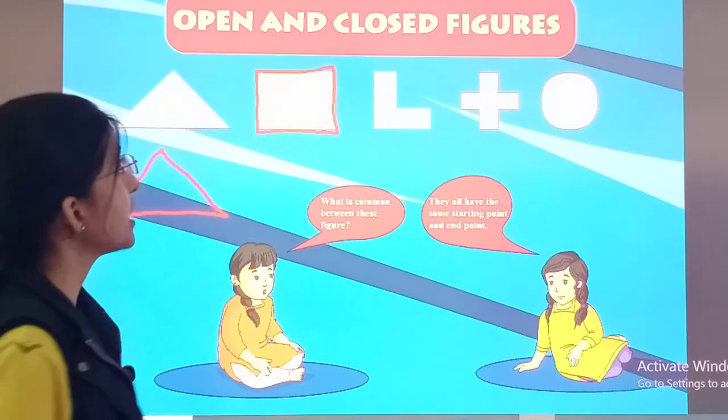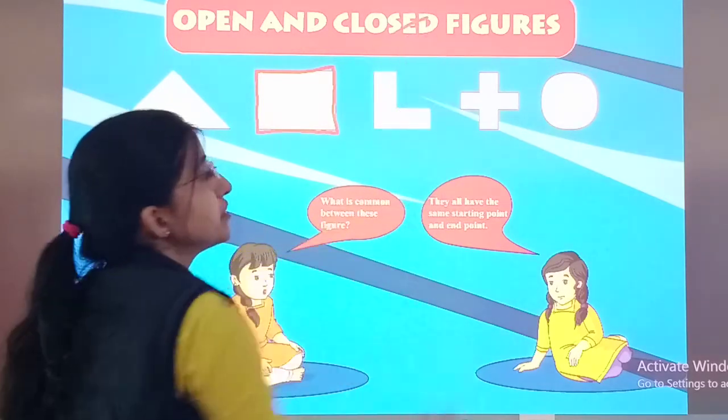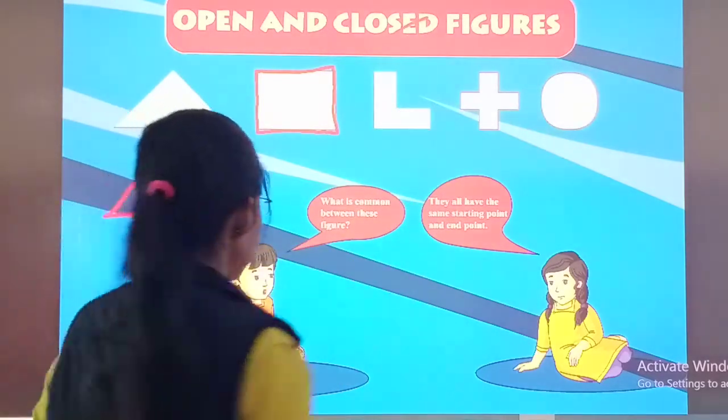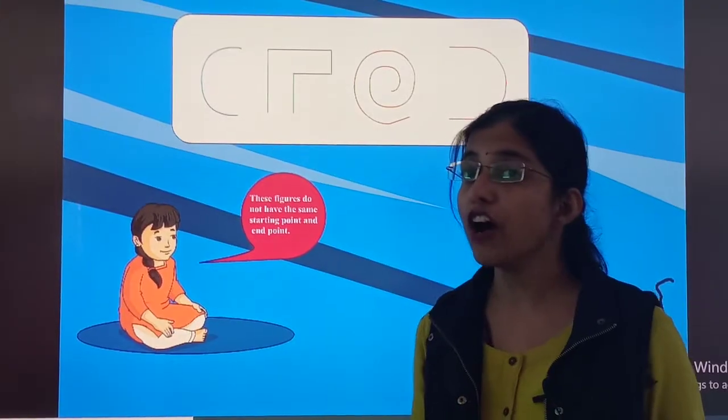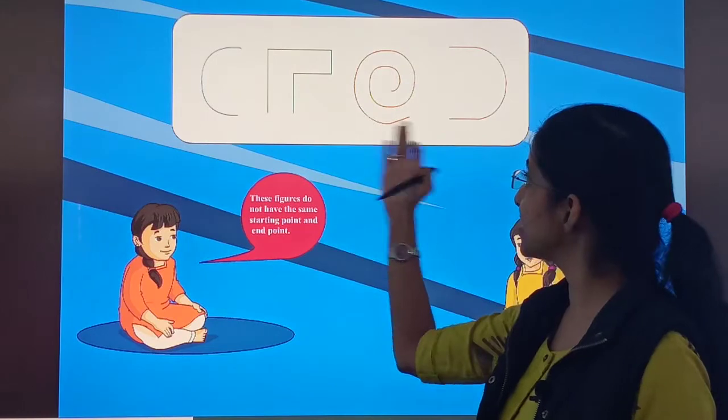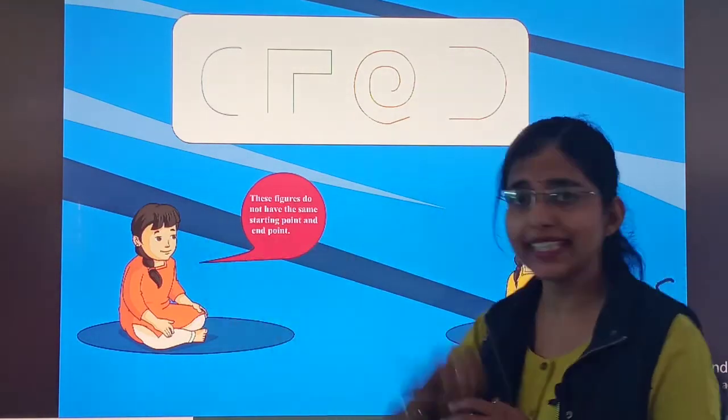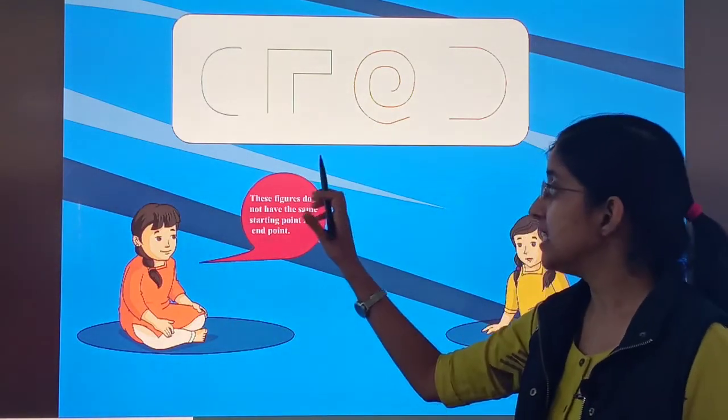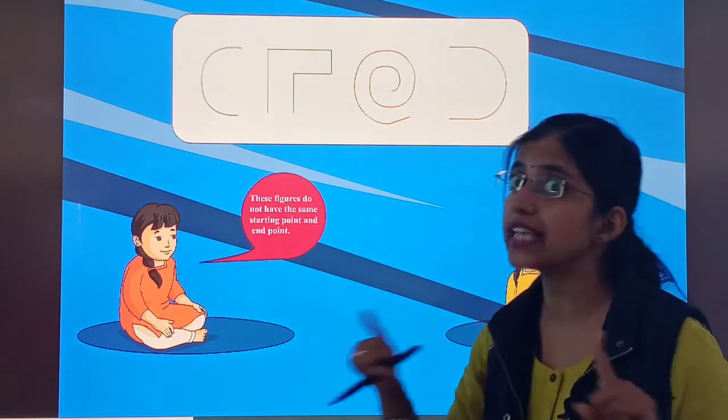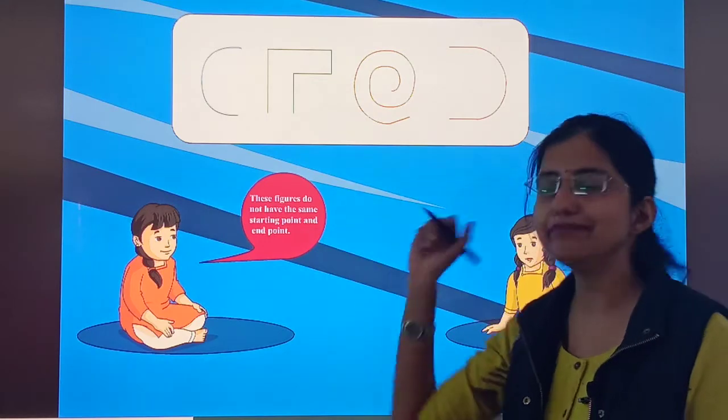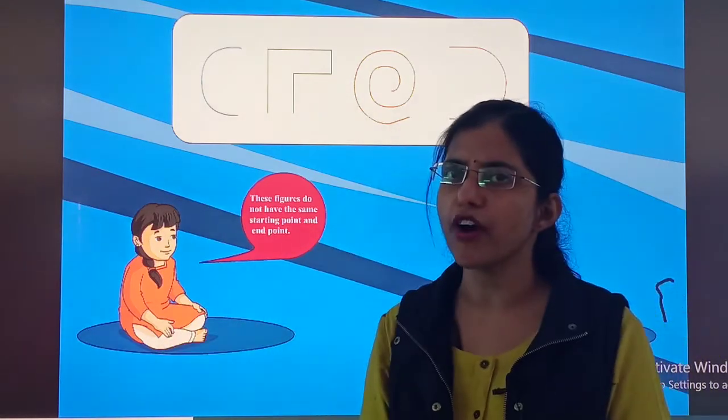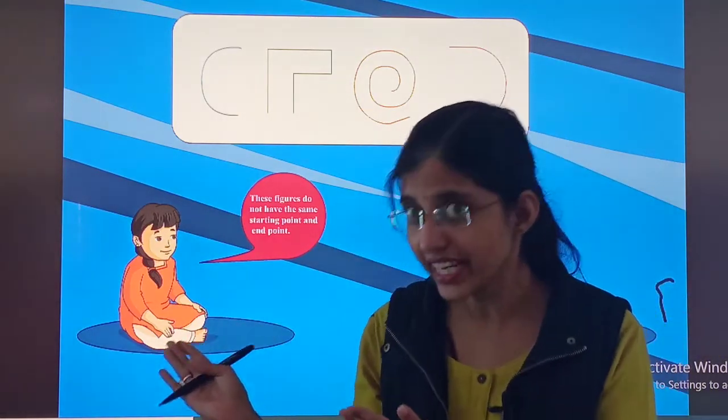Now, we have a second set of figures. And what is Minnie telling? She is telling, these figures do not have the same starting point and ending point. So, is Minnie correct? Let's see.